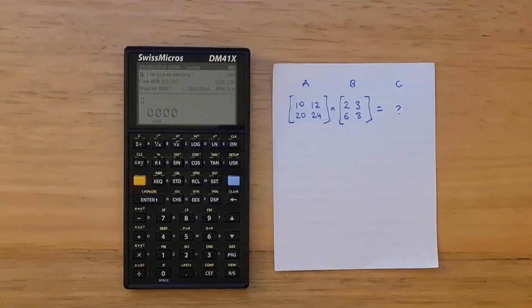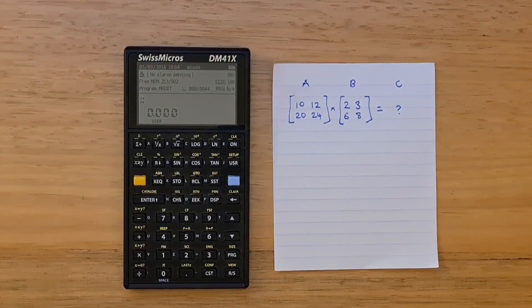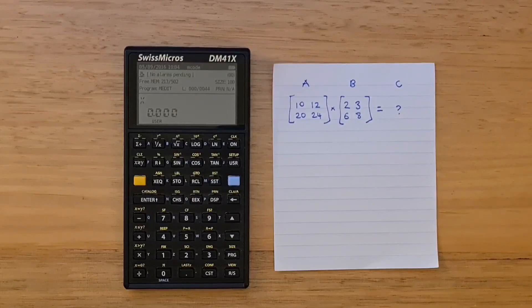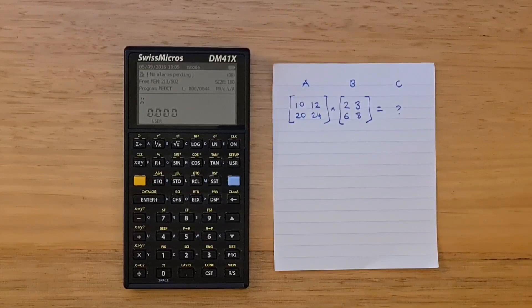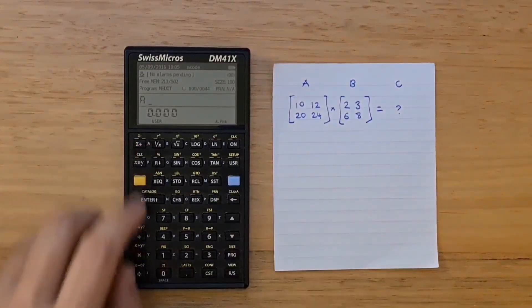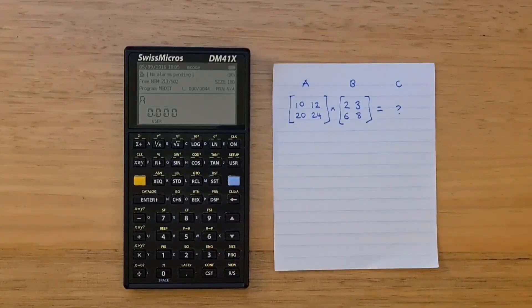The biggest new features the Advantage Pack brought to the 41C was matrix capabilities, and they were comprehensive with over 50 functions operating on real or complex matrices. I'll show a quick example of a matrix multiplication. To create a matrix, use the matdim function. This takes a name of a matrix in the alpha register and the dimensions in the X register. I'll enter A into the alpha register and then 2.002 in X. This indicates a 2 by 2 matrix.